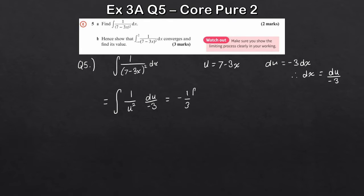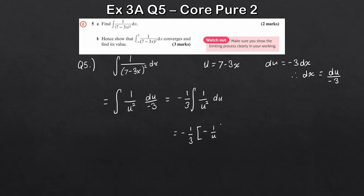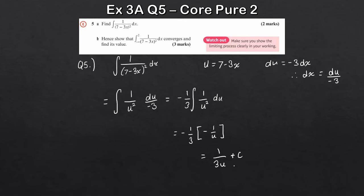We take out minus 1 over 3 to the front using linearity, leaving minus a third times the integral of 1 over u squared du — a fairly standard integral. Integrating: u to the minus 2, add 1 to the power, divide by the new power, gives minus 1 over 3 times minus 1 over u, which is 1 over 3u. Don't forget the constant of integration. Resubstituting u equals 7 minus 3x gives 1 over 3(7 minus 3x) plus c.